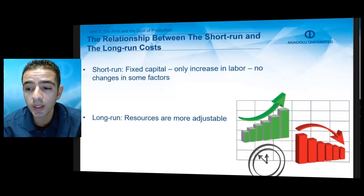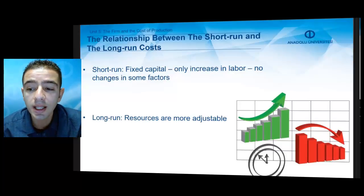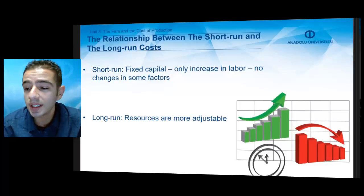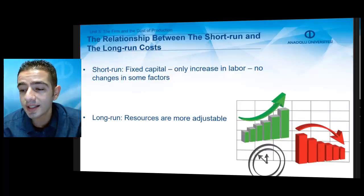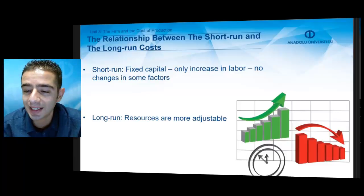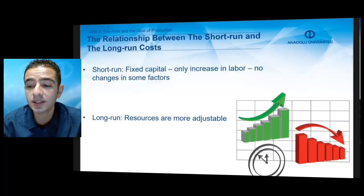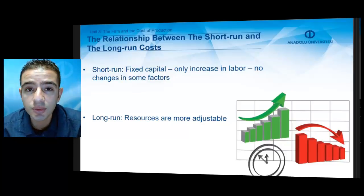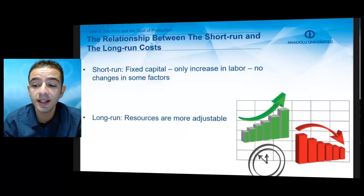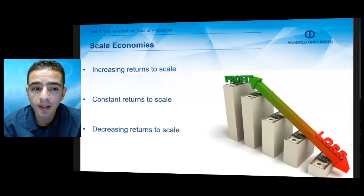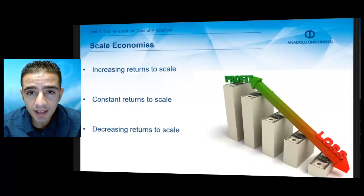When more capital is used for a given amount of labor employed, output will increase. In the short run, some factors of production cannot be changed, whereas in the long run it is a time frame in which a firm can adjust the usage of all resources if it deems necessary.